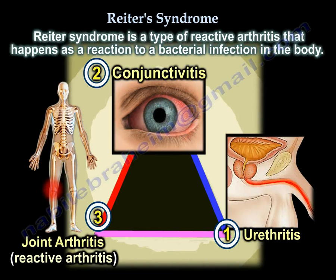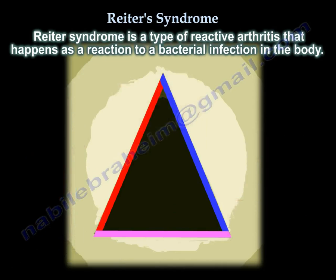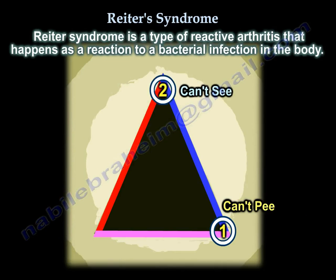It has the following components: urethritis, conjunctivitis, and joint arthritis or reactive arthritis. The mnemonic is: patient cannot pee, patient cannot see, patient cannot climb a tree.